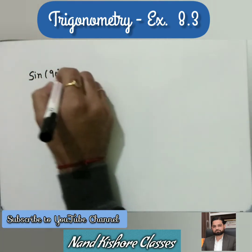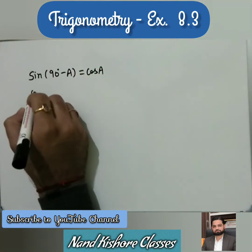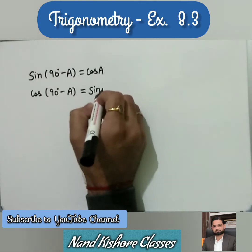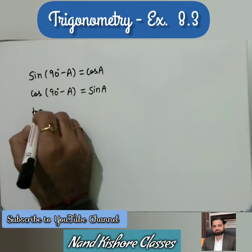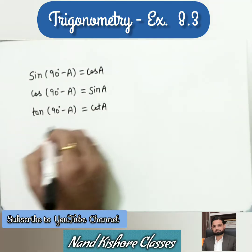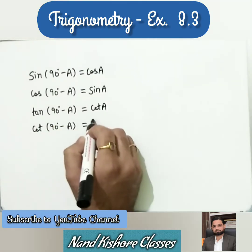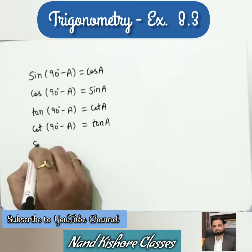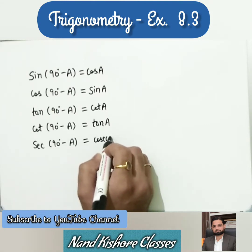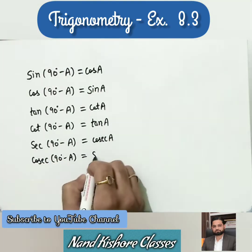Sin(90 - A) is equal to cos A. Cos(90 - A) is sin A. Tan(90 - A) is equal to cot A. Then sec(90 - A) is cosec A, and cosec(90 - A) is sec A.